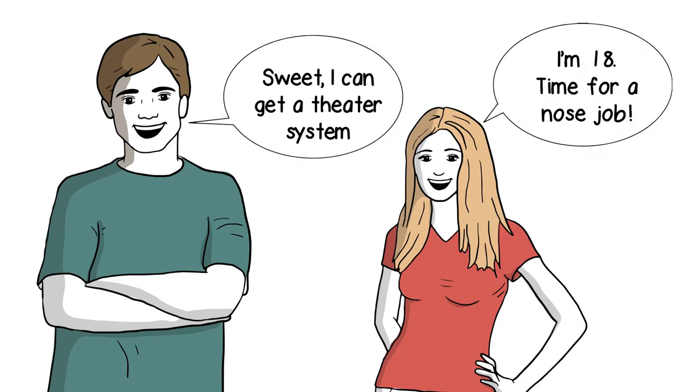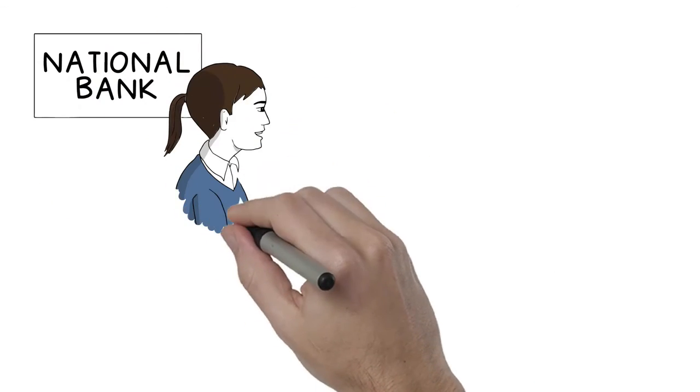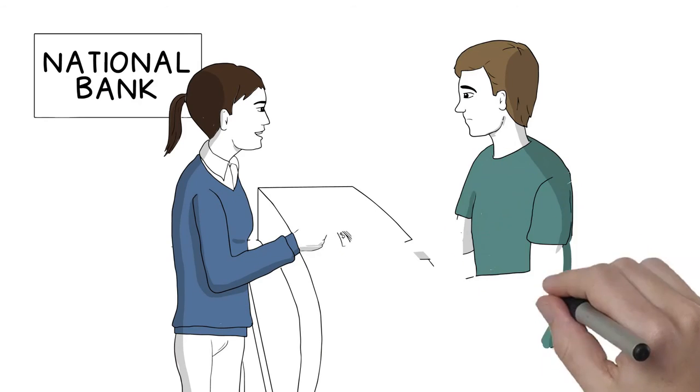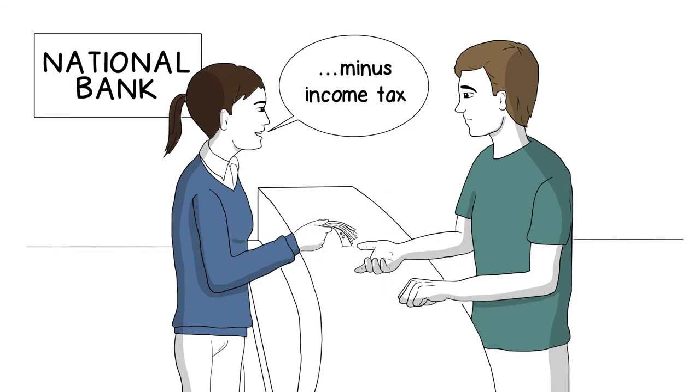Carl could buy a home theater system. Wendy might use her money for cosmetic surgery. But let's assume your kids do use the money for college. All their withdrawals will be taxed at their tax rate as students because it's their money.